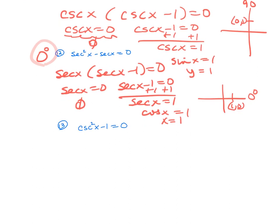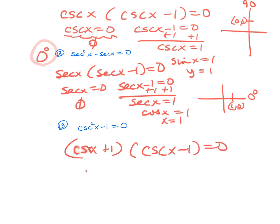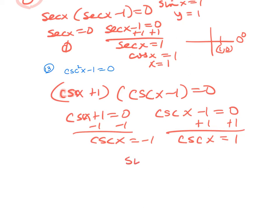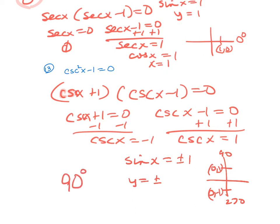Number 13, the last one — I'm going to factor this as a difference of squares: (cosecant x plus 1)(cosecant x minus 1) equals 0. Setting each factor to 0: cosecant x equals negative 1 and cosecant x equals 1. Thinking of the reciprocal, we're looking for sine x to equal plus or minus 1. Sine looks at y: y is positive 1 at 90 degrees and negative 1 at 270 degrees. So the two answers for number 13 are 90 and 270 degrees.